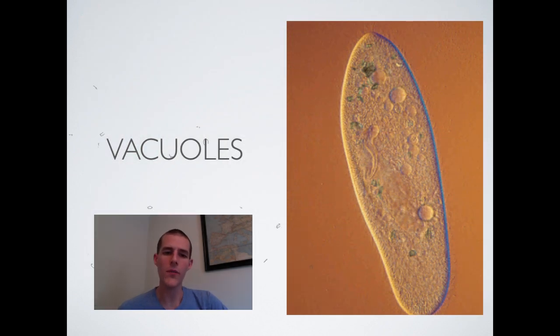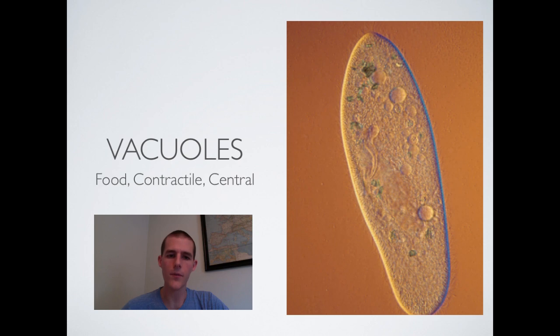And our last organelle for the day are vacuoles. There are three types and they've each got different functions. Food vacuoles are just like little storage trunks. They hold on to food molecules for the cell until a lysosome fuses with them and digests that food that's inside. There are contractile vacuoles. Now I want to show you something here real quick. This little guy off on the side is a little paramecium. You can see on this guy he's got all of these little things that look like craters on the moon.